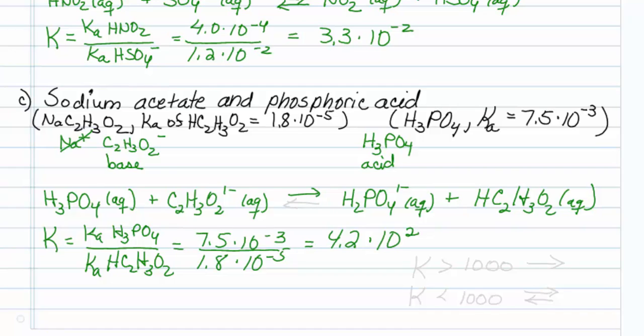Okay, by convention, if it is a K that is greater than 1,000, one uses a single arrow to the right, and if K is less than 1,000, one uses equilibrium arrows. So you know, technically I'll use equilibrium arrows on this one. And that's how to write net acid base reactions.